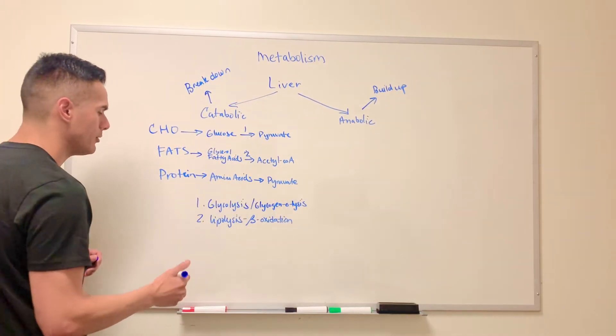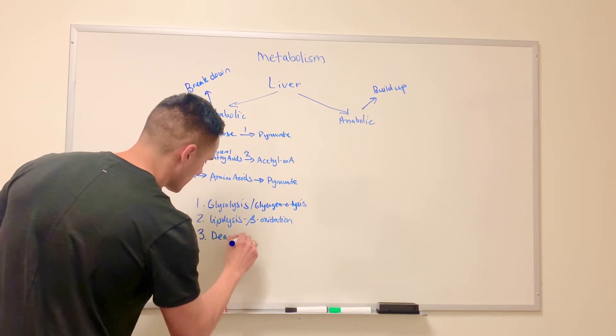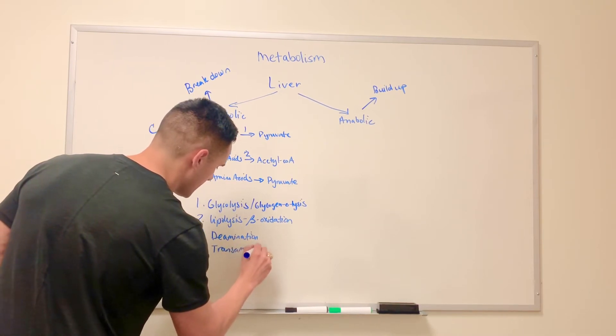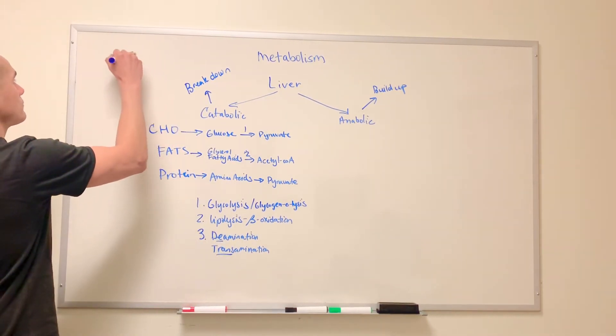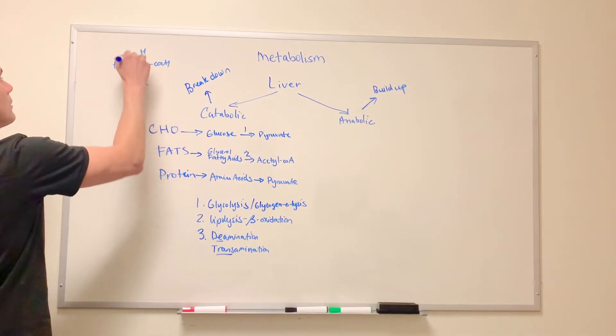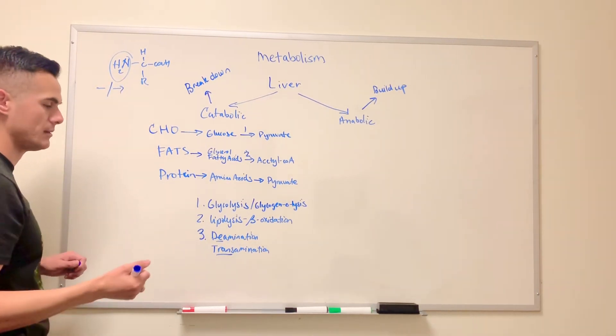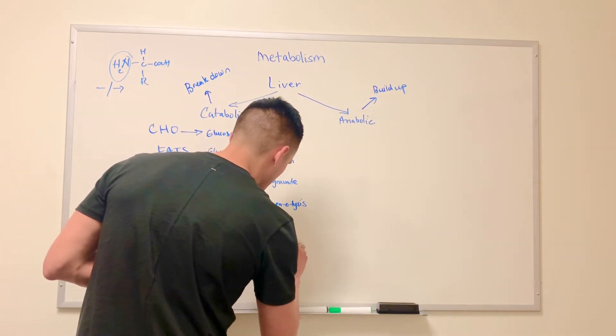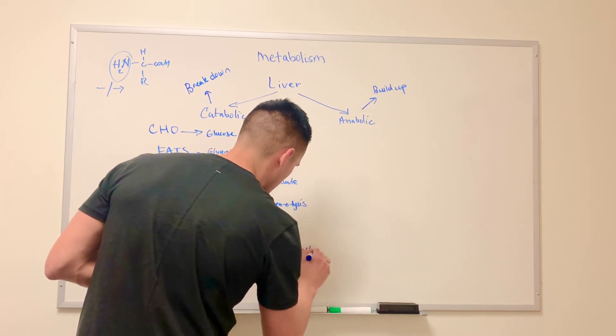So in order for pyruvate to form, what needs to occur is known as deamination and transamination. And what this means is that we can either remove this amine group or we can transfer this amine group. And so reactions where this occurs happens in the urea cycle and also the Krebs cycle.